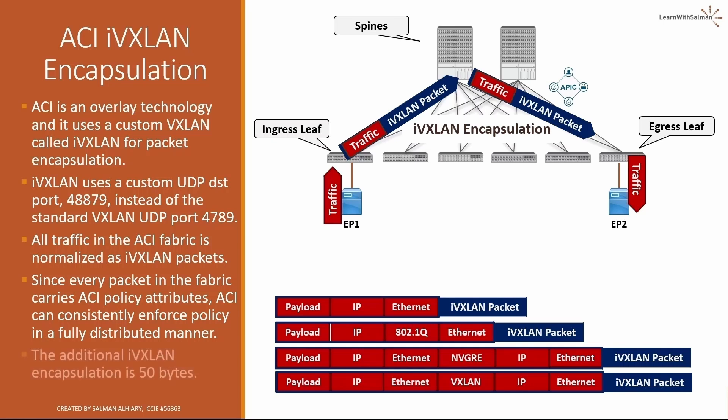The additional IVXLAN encapsulation overhead is 50 bytes total: 8 bytes for the IVXLAN header, plus 8 bytes UDP header, plus 20 bytes IP header, and 14 bytes Ethernet or MAC header.